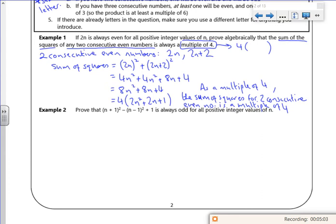So it says here that prove that n plus one squared minus n minus one squared plus one is always odd for all positive integers. Right, let's have a look at them. n plus one squared minus n minus one squared plus one. So if it's odd, I want it as two lots of something plus one. So n squared plus 2n plus one minus n squared minus 2n plus one plus one.